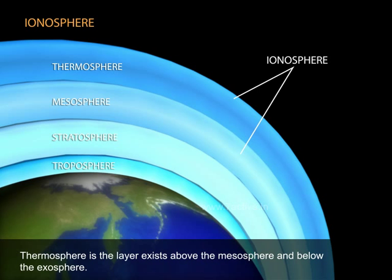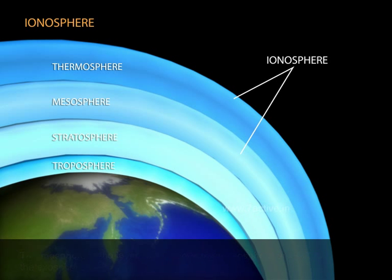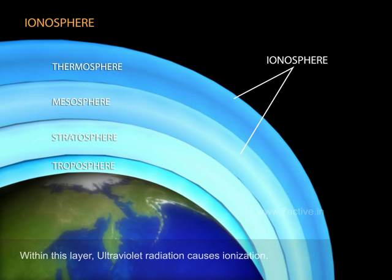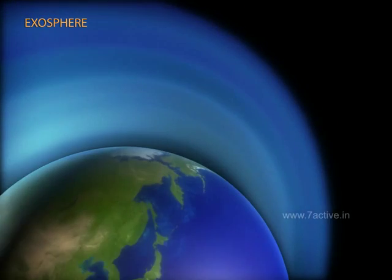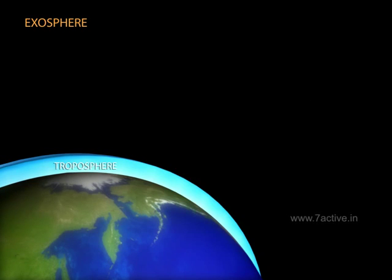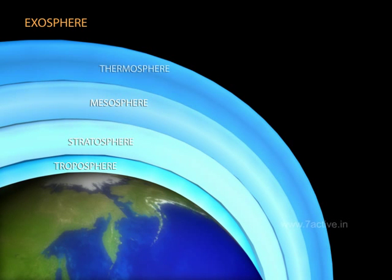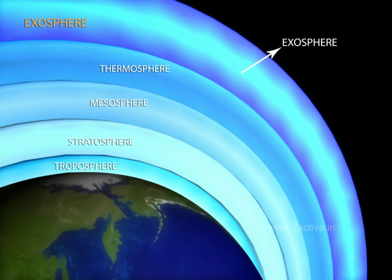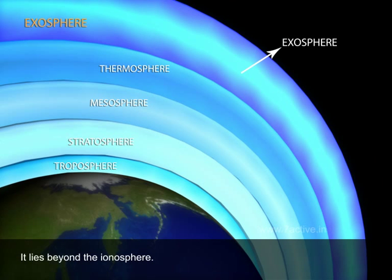Thermosphere is the layer that exists above the mesosphere and below the exosphere. It lies beyond the ionosphere. Within this layer, ultraviolet radiation causes ionization. Atmospheric pressure is extremely low here.